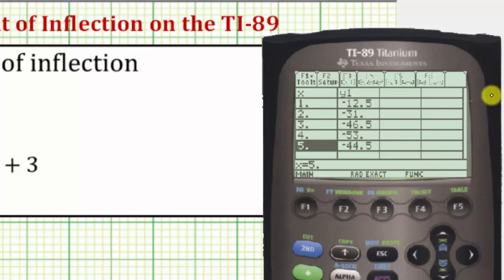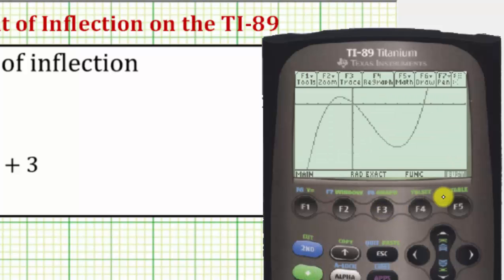We have a nice window, so let's go back to the graph by pressing diamond F3. Notice how on the left the function is concave down, on the right the function is concave up. So there's a point of inflection somewhere in this region here.